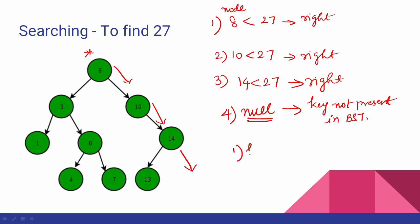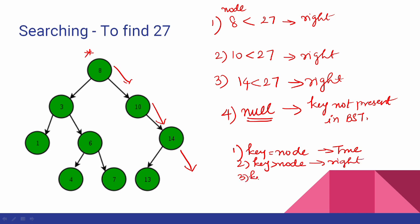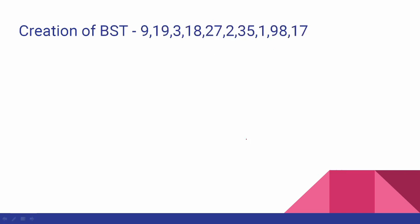The search algorithm conditions: first, if the key is equal to the node value, that is the search element — return true. If the key is greater than the node value, move to the right side. If the key is less than the node, move to the left side.